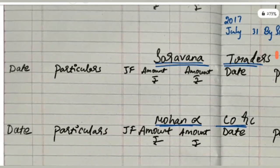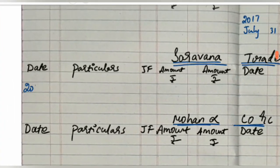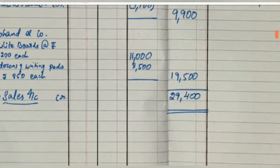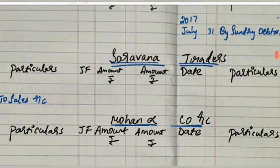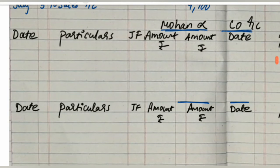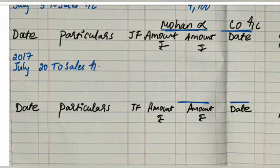Next we post to the individual debtor accounts. Saravana Traders account: on July 5, 2017 — To Sales Account, Rs. 9,900 on the debit side. Mohanan Co. account: on July 20, 2017 — To Sales Account, Rs. 19,500 on the debit side.